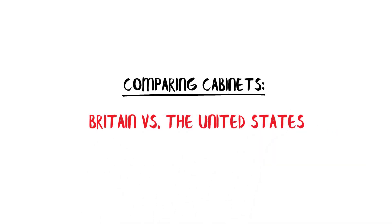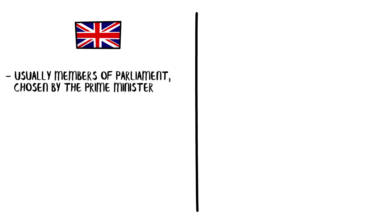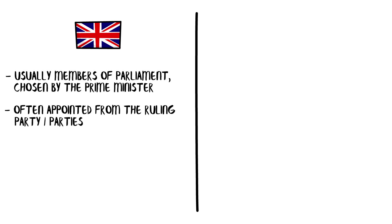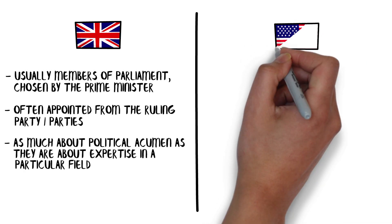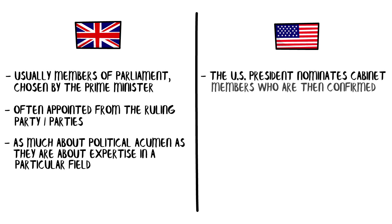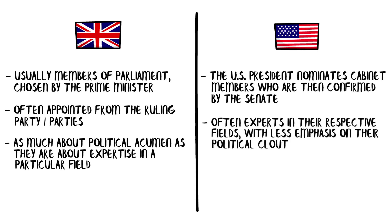Comparing Cabinets: Britain vs. the United States. Moving on to a transatlantic comparison, let's ponder the British cabinet and how it stacks up against its American counterpart. In the UK, cabinet members are usually members of parliament, chosen by the Prime Minister. They are often appointed from the ruling party or, in the case of a coalition, parties. These appointments are as much about political acumen as they are about expertise in a particular field.